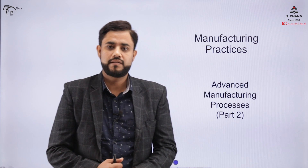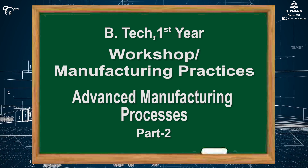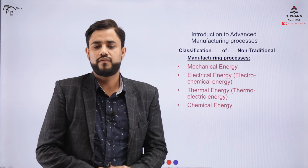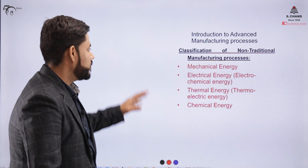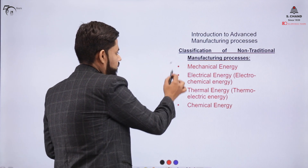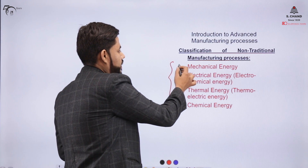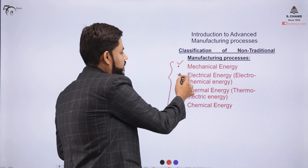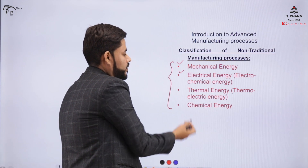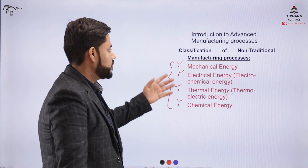This topic is part of the course Manufacturing Practices, also called advanced manufacturing processes, non-conventional manufacturing processes, or non-traditional manufacturing processes. The major classification is done in terms of the energy we supply to machine the raw material: mechanical energy, electrical energy (electrochemical process), thermal energy (thermoelectrical process), and chemical energy.